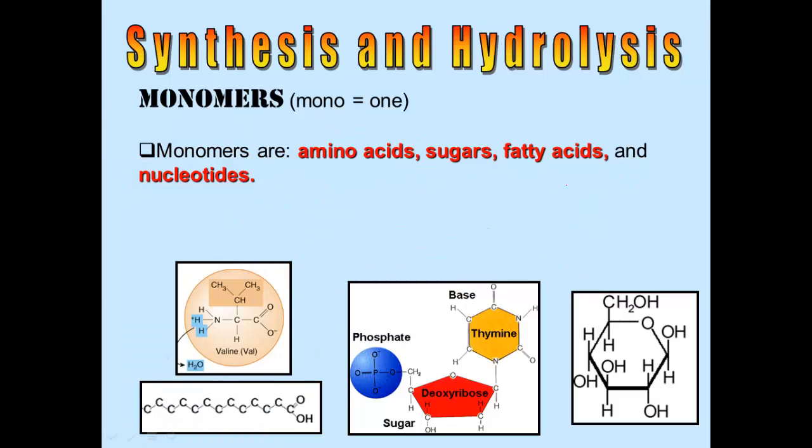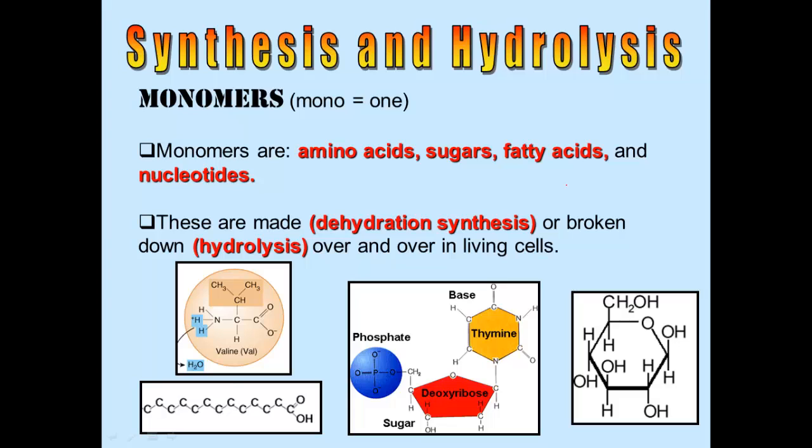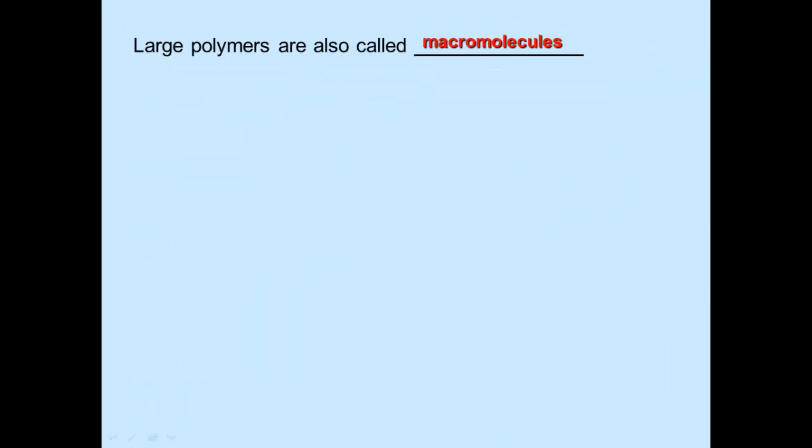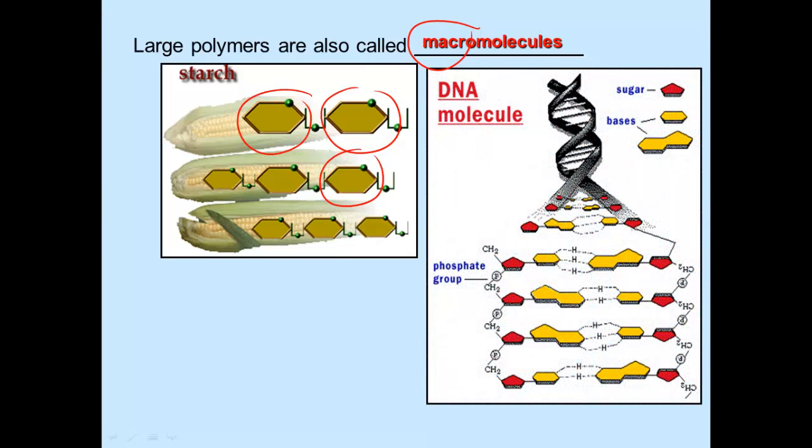So monomers are made up of one molecule. And when you put a whole bunch of monomers together via dehydration synthesis, which we'll talk about shortly, you would make a polymer. And if you take a polymer and cut it apart using hydrolysis, then you would be back to monomers again. The large polymers are also called macromolecules. Macro meaning big molecule. Starch is a big molecule made up of a whole bunch of sugars linked together. DNA is a macromolecule made up of a whole bunch of nucleotides linked together.